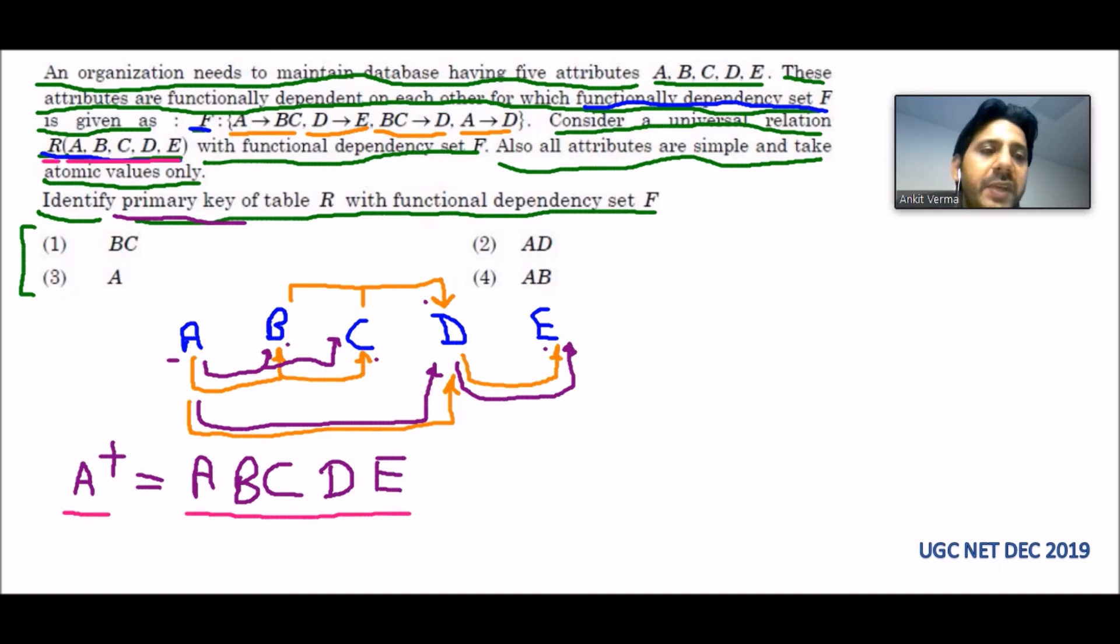A, B, C, D, E are all the attributes of relation R. That means the closure of A can find all the attributes of relation R, which means it is satisfying the condition for the candidate key. So A is the candidate key.